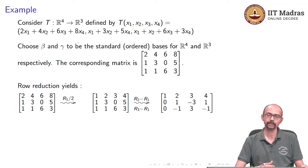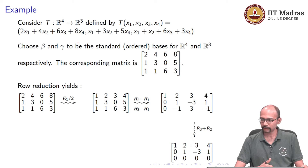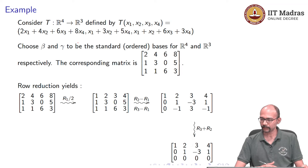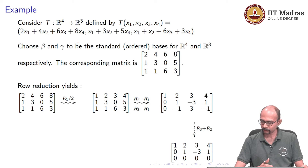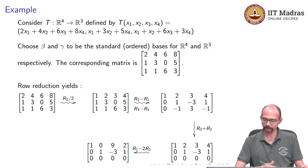The (2,2) entry is conveniently 1, so we knock out the entry below it. Doing R3 plus R2 knocks out the entire third row. Then we do R1 minus 2R2 to convert to reduced row echelon form. The final reduced row echelon form is: row 1 is (1, 0, 9, 2), row 2 is (0, 1, −3, 1), row 3 is (0, 0, 0, 0).